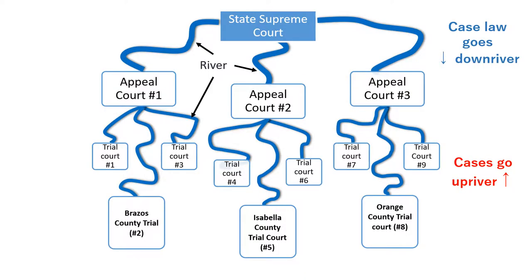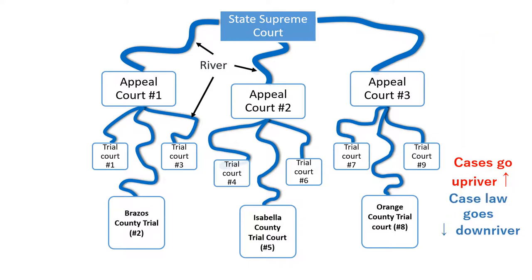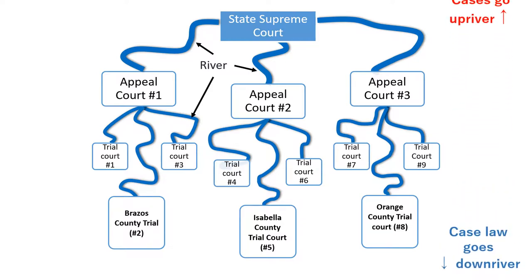The headwater of the river of case law is the State Supreme Court. Case law goes down river; cases go up river. The blue lines represent the river. Under appeal court number 1 are trial courts 1, 2, and 3 — the specific name of trial court number 2 is Brazos County Trial Court. Under appeal court number 2 are trial courts 4, 5, and 6 — the specific name of trial court number 5 is Isabella County Trial Court. Under appeal court number 3 are trial courts 7, 8, and 9 — the specific name of trial court number 8 is Orange County Trial Court.